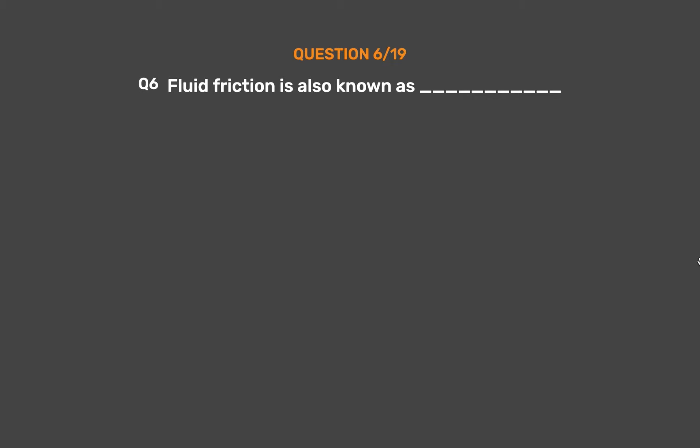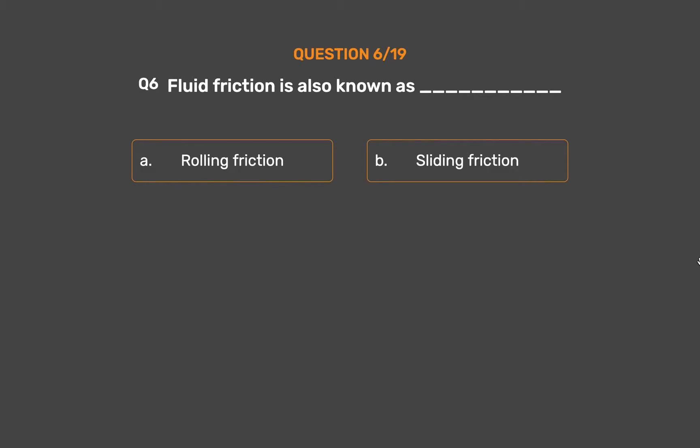Question number 6. Fluid friction is also known as blank. Option A: Rolling friction. Option B: Sliding friction. Option C: Drag. Option D: Static friction.